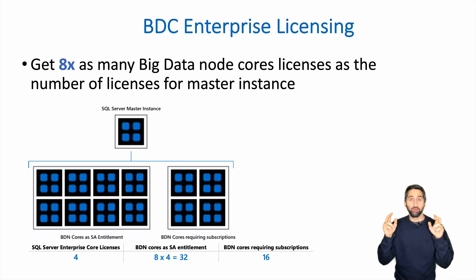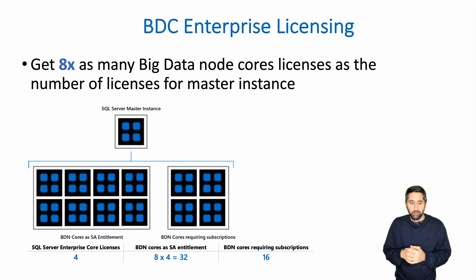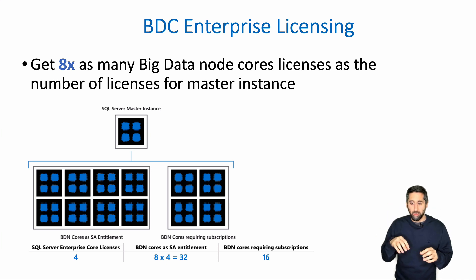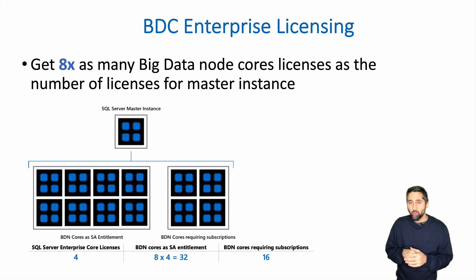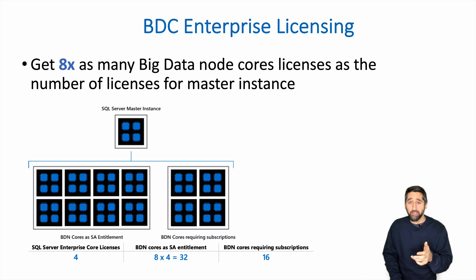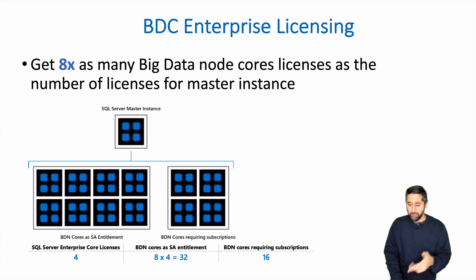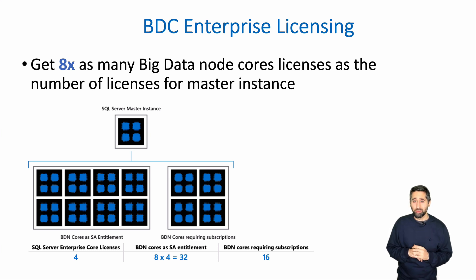Those 32 cores are your entitlement cores if you have software assurance. So now you can take those 32 entitled cores and divvy them out across your servers however you want. In this example you're left with 16 cores that you need to purchase a core license for, which is $400 a year for a two-pack — so $200 per core. With Enterprise Edition you get eight times the number of cores you have licensed on the master instance.